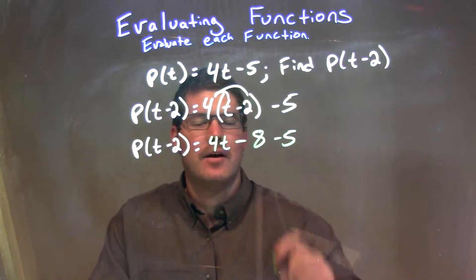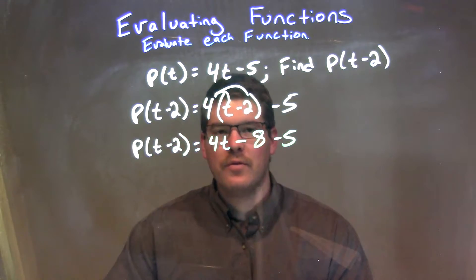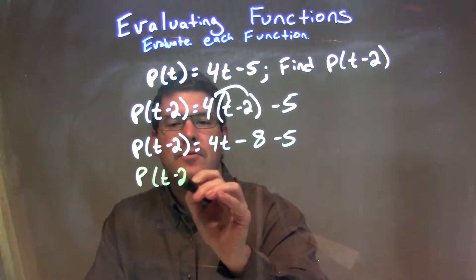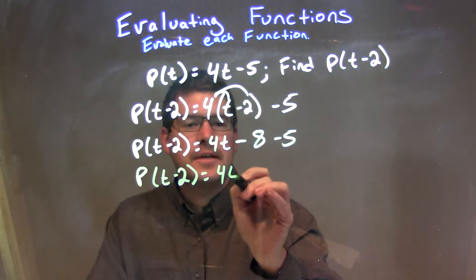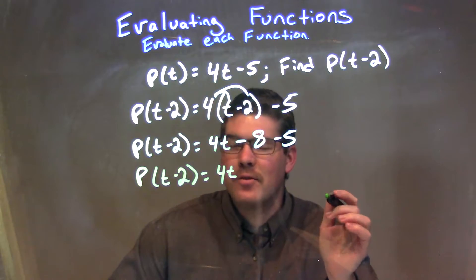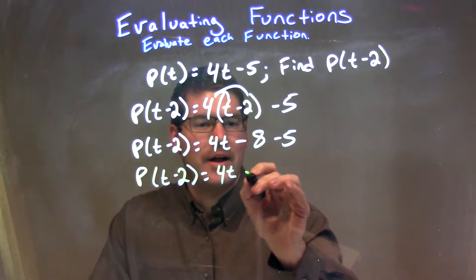And then we have a minus 5 that comes down. Now we need to simplify. We need to combine our like terms. So P of t minus 2 here is equal to 4t, and then we have minus 8 minus 5. Minus 8 minus 5 is minus 13.